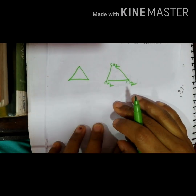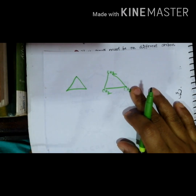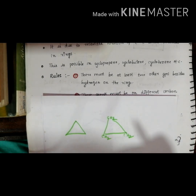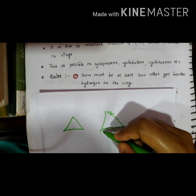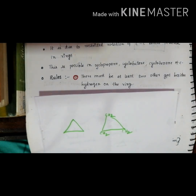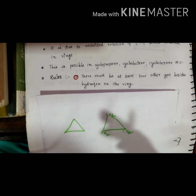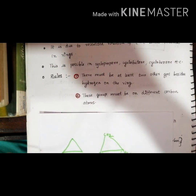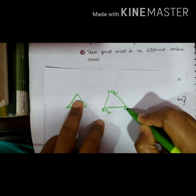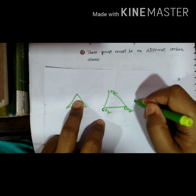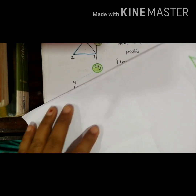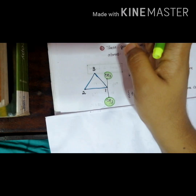Considering cyclopropane again according to our rule: there must be at least two other groups besides hydrogen on the ring. Every carbon contains two hydrogens, and other than this, a group must also be present — that is rule number one for geometrical isomerism in rings. Rule number two is that these groups must be on different carbon atoms, meaning the two different groups must be on two different carbons.